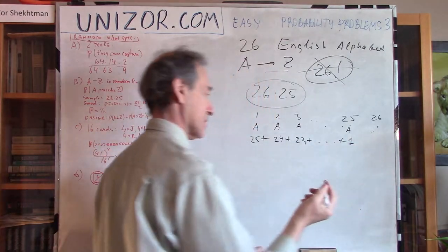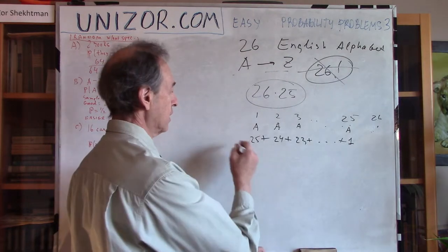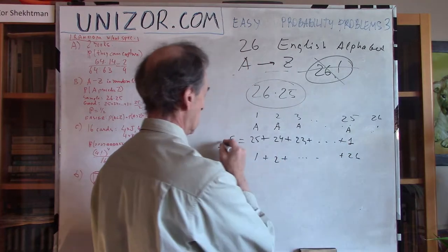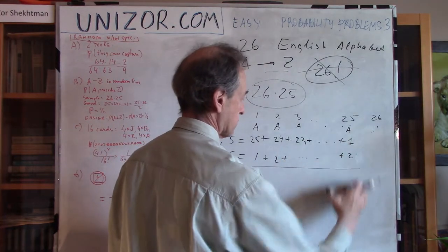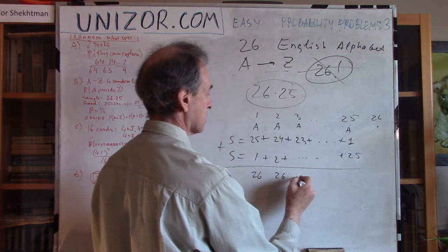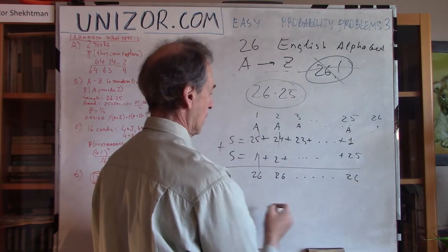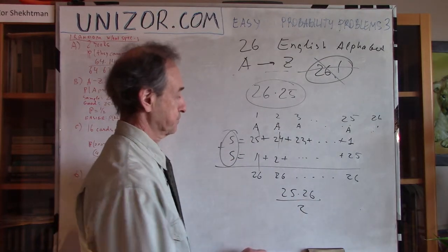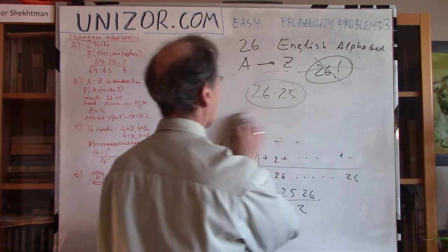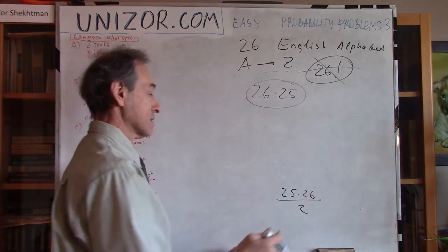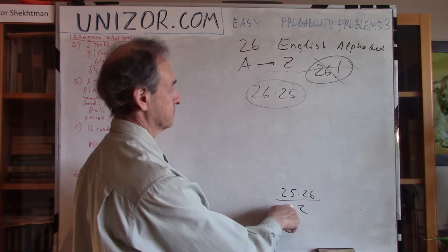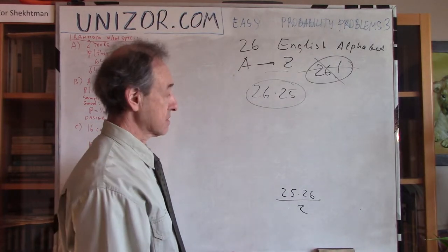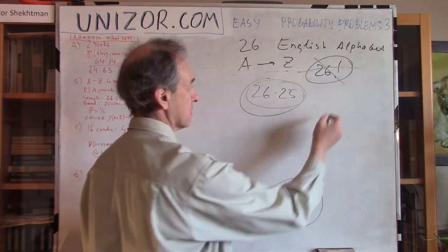This sum is an arithmetic progression. Writing it in reverse and summing with the original, each pair gives 26, and there are 25 pairs, giving 2S = 25 × 26, so S = 25 × 26 / 2. The probability is therefore (25 × 26 / 2) divided by (26 × 25), which equals 1/2. So the answer is one half.